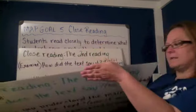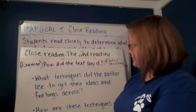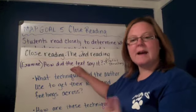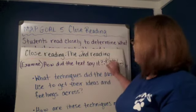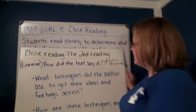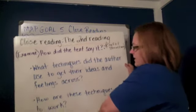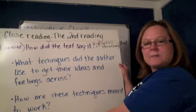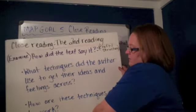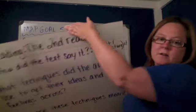Then you'll read the text a second time. During the second reading, you're going to examine it more closely. How did the text say it? How did the text get you to understand? What was the craft and the structure the author used to help you understand those concepts? You're looking at what techniques the author used to get their ideas and feelings across, and how those techniques are meant to work — not did they work, but how are they meant to work. Those are the kinds of notes you'll take the second time — over the techniques.